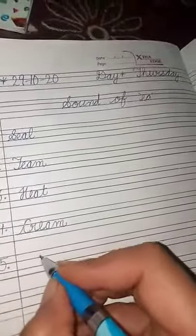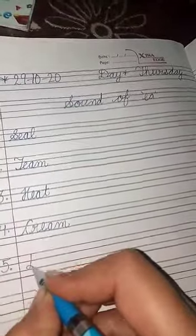Next is fifth number, it is deal. D-E-A-L, deal.